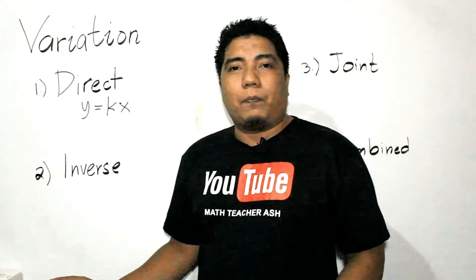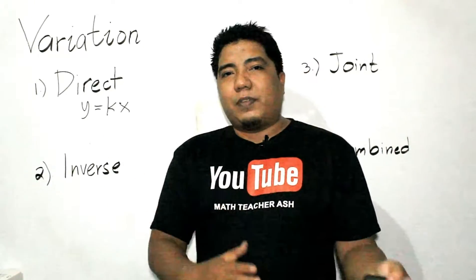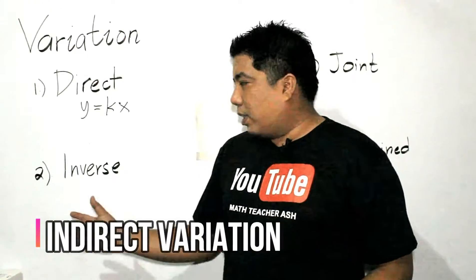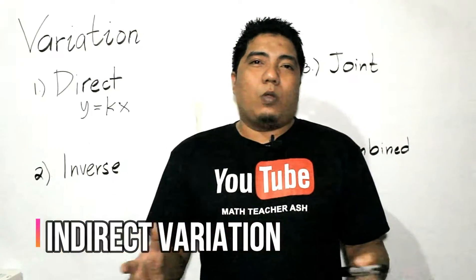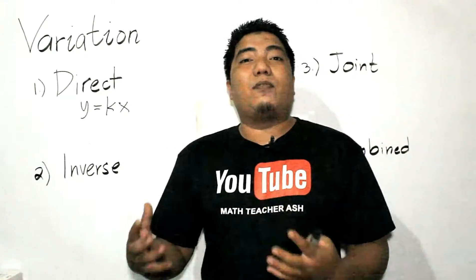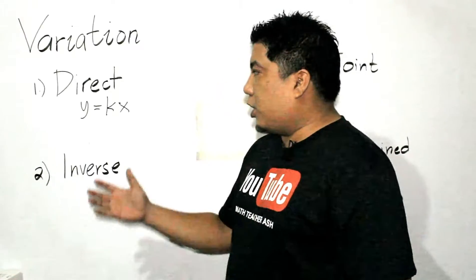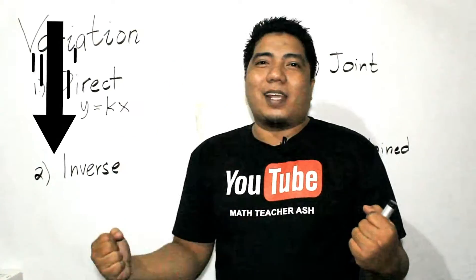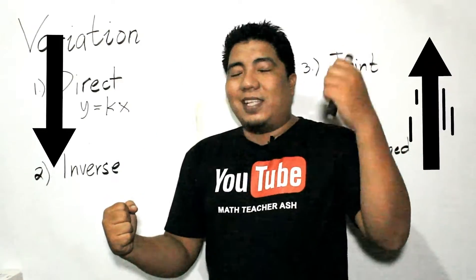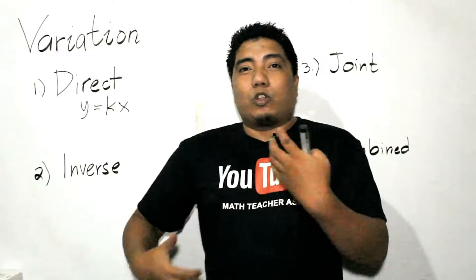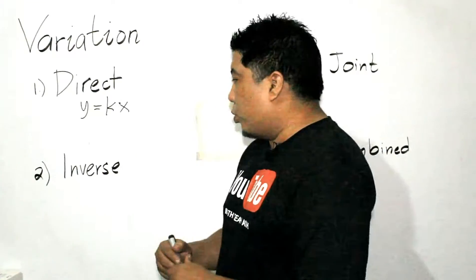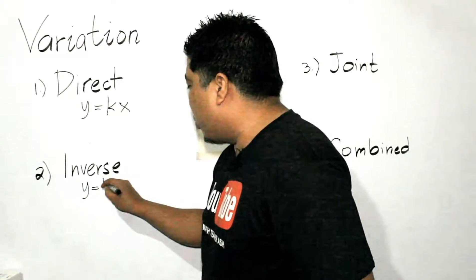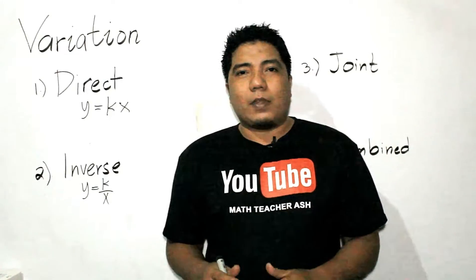For inverse variation — the opposite of direct, also called indirect variation in some books — when x increases, y decreases, and when x decreases, y increases. We show that in a mathematical sentence as y is equal to k over x.